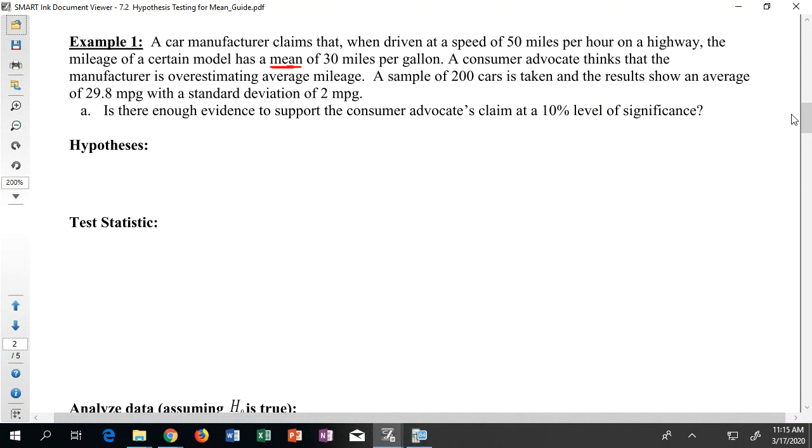A consumer advocate though thinks that the manufacturer is overestimating that average mileage. A sample of 200 cars is taken and the results show that there is an average of 29.8 miles per gallon with a standard deviation of two miles per gallon. Is there enough evidence to support the consumer advocate's claim at a 10% level of significance?